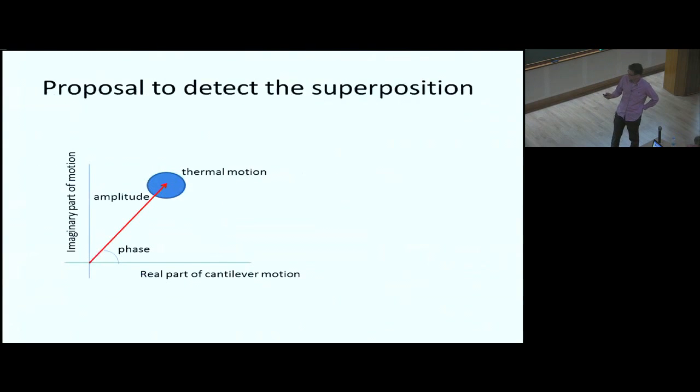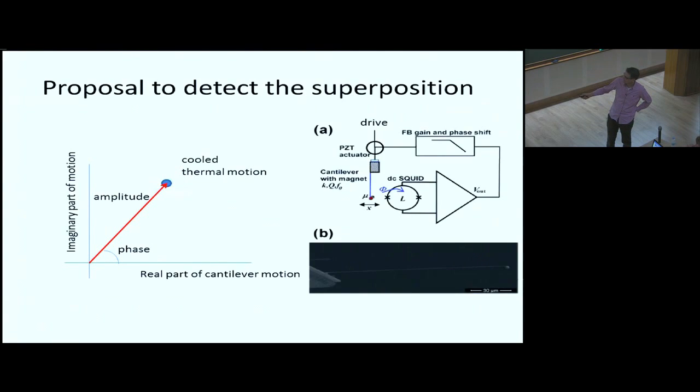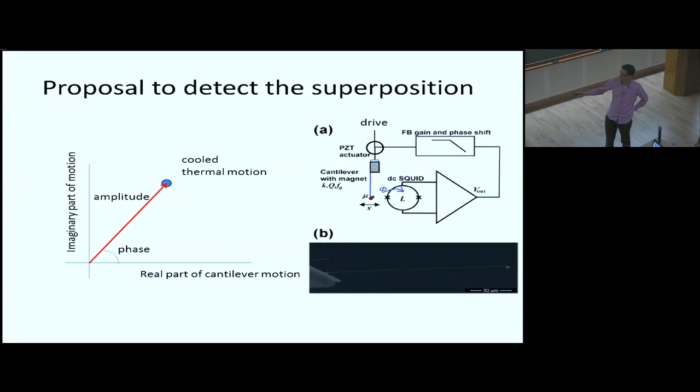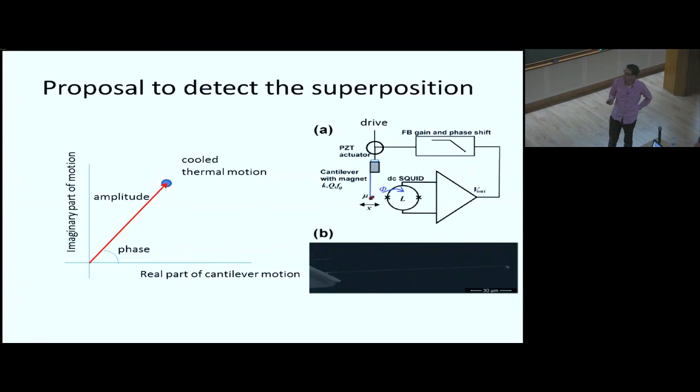So what this means is we can drive this resonator and then we can switch on the cooling by this feedback system. And then you measure the motion, you phase shift it, and you drive the piezo to take out the motion. So this is the normal thermal motion on top of a driving, and this would be the cooled thermal motion on top of the driving.